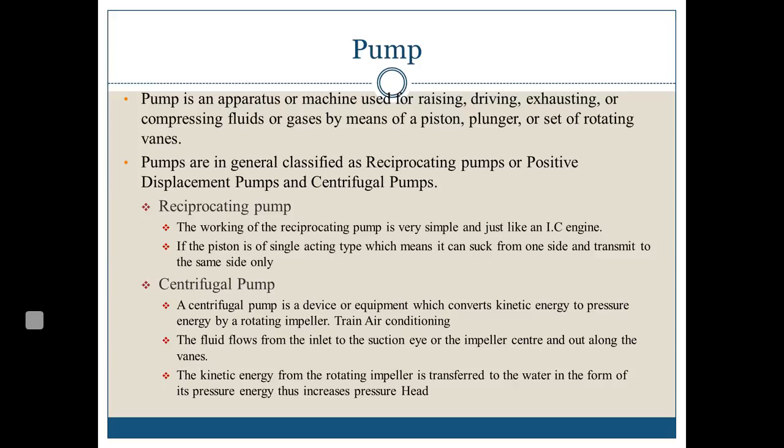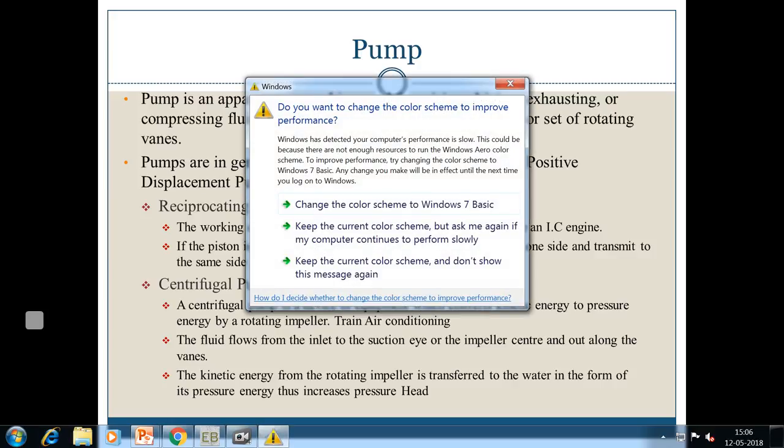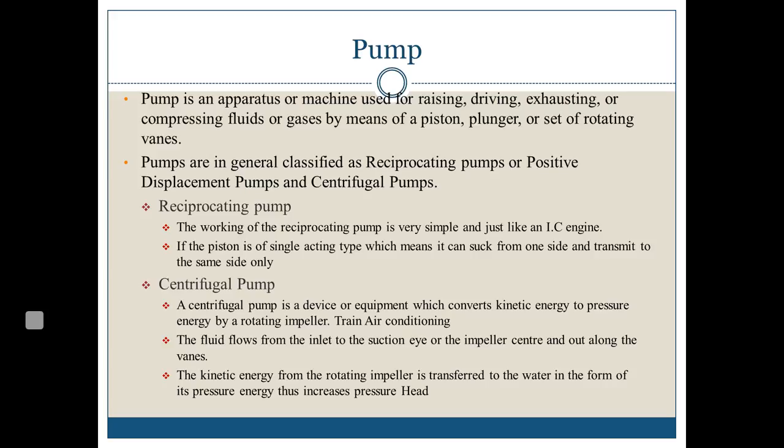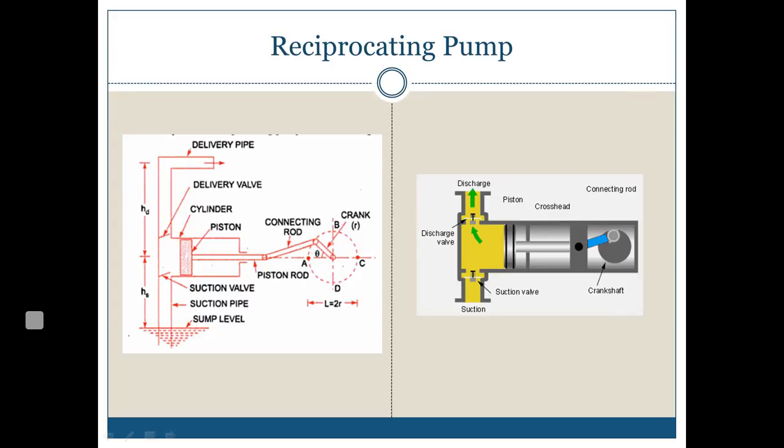A reciprocating pump is basically a similar device to an internal combustion engine — it has a piston, connecting rod, and cylinder arrangement. For a centrifugal pump, it is a device which converts kinetic energy into pressure energy by means of a rotating impeller. Fluid flows from the inlet at the center of the vane, and the kinetic energy from the rotating impeller is transferred to the water as pressure energy, thus the pressure head increases.